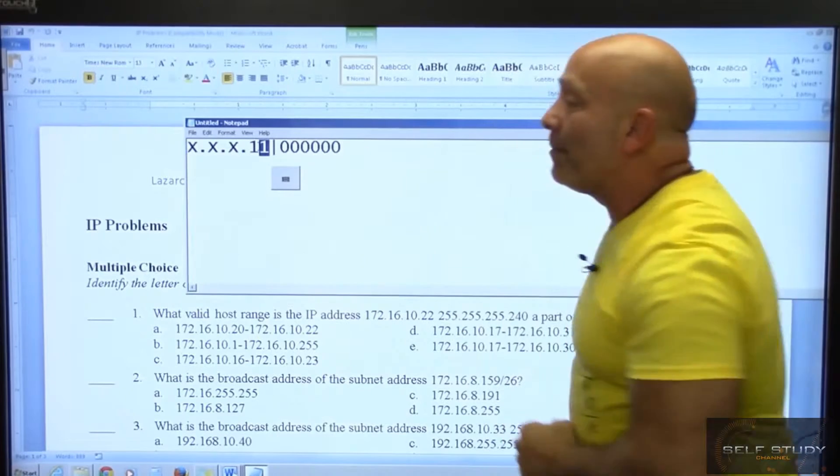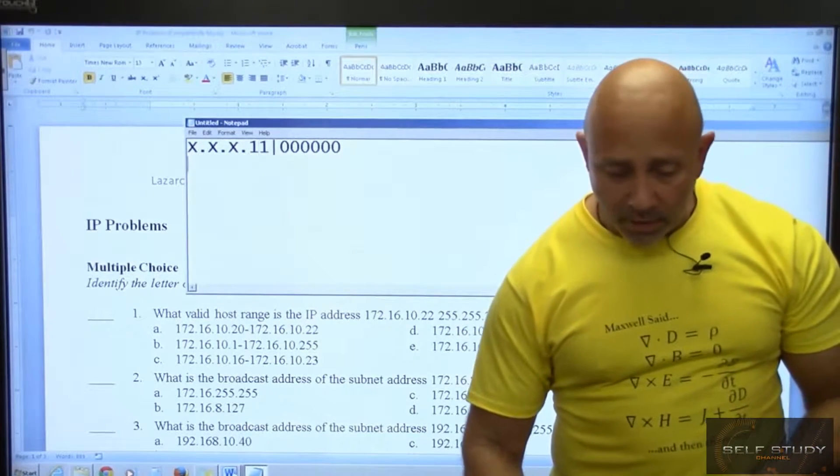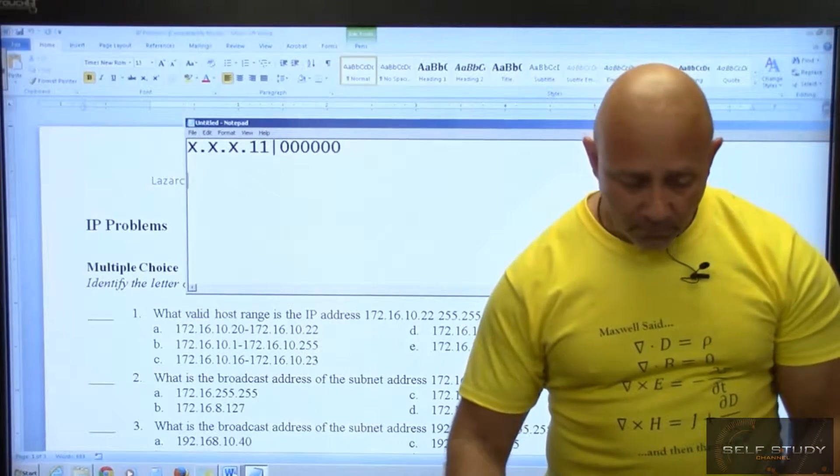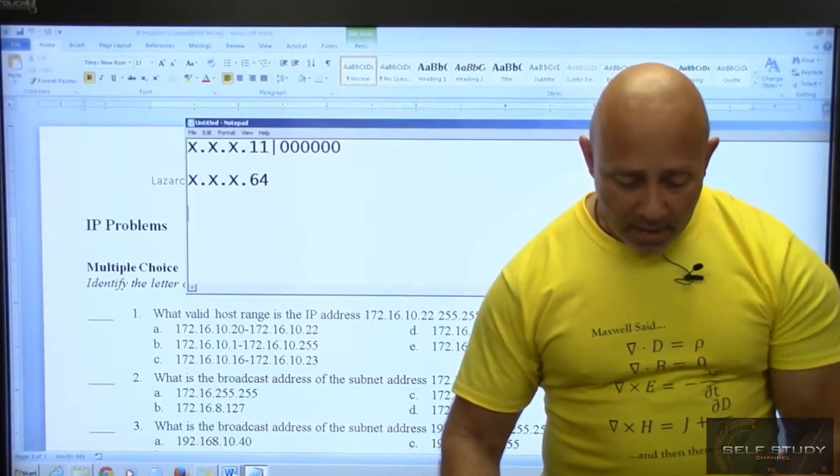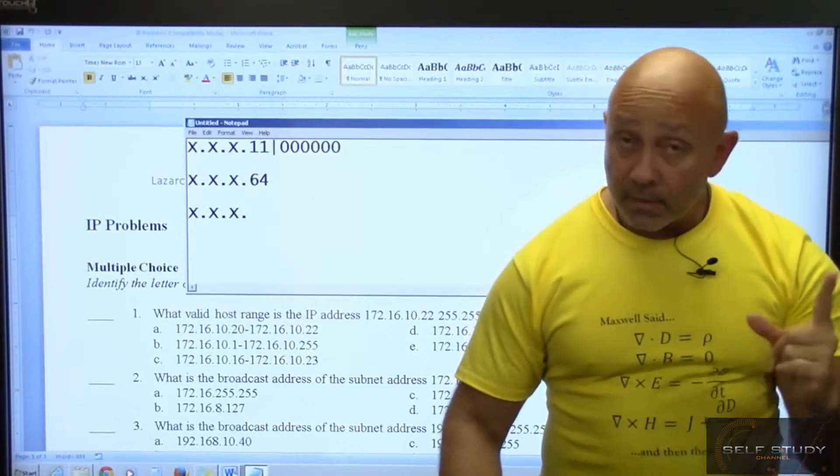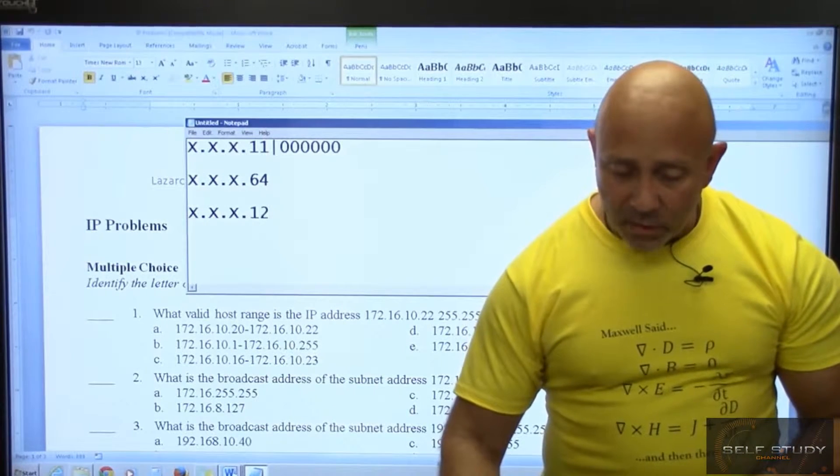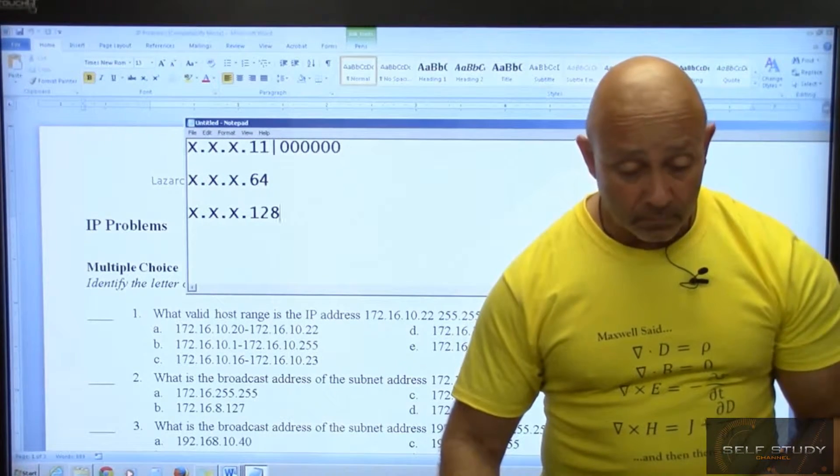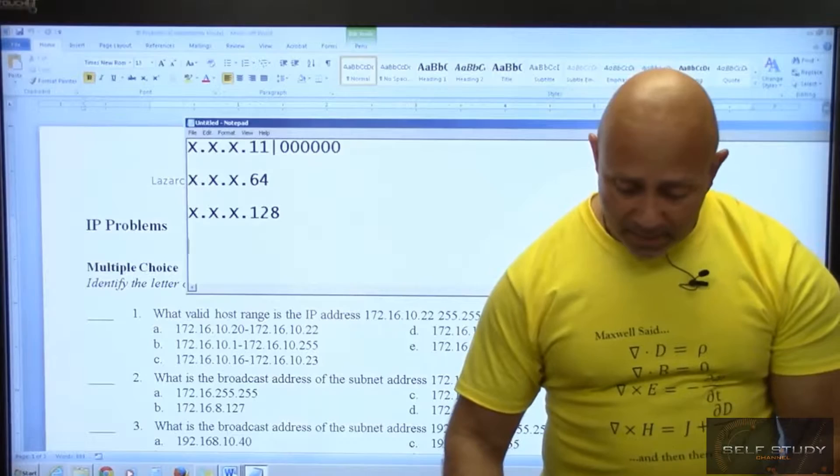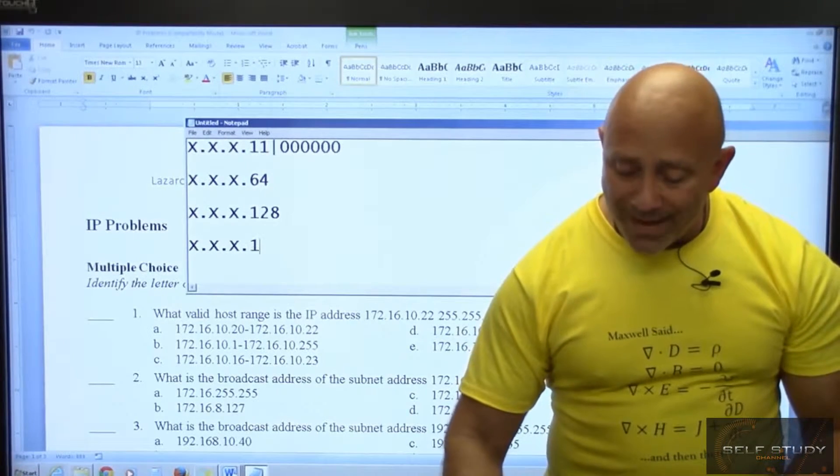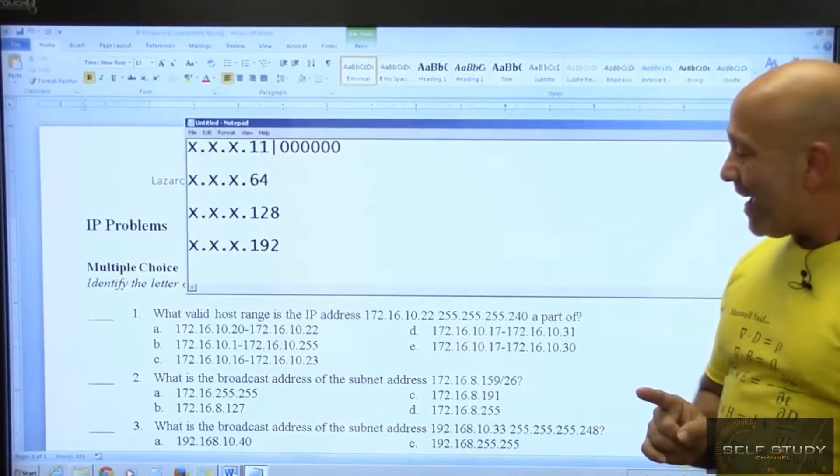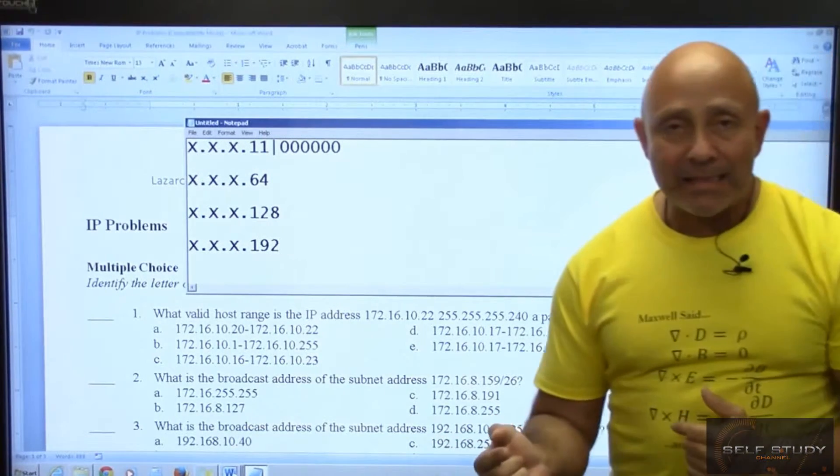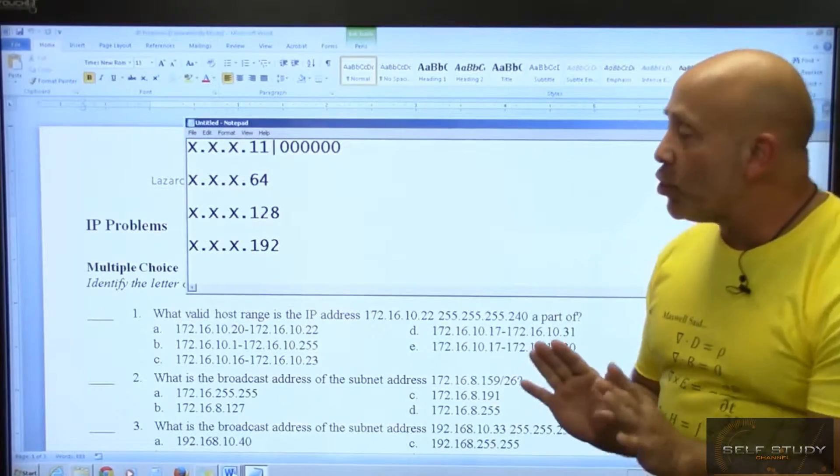So we increment by what? This number right here, we're incrementing by 64. So therefore X.X.X.64, X.X.X.64 again, that's 128. If we increment again, X.X and 64, that's 192. So 159 is less than 192, so there's no way that 159 will fall in there.